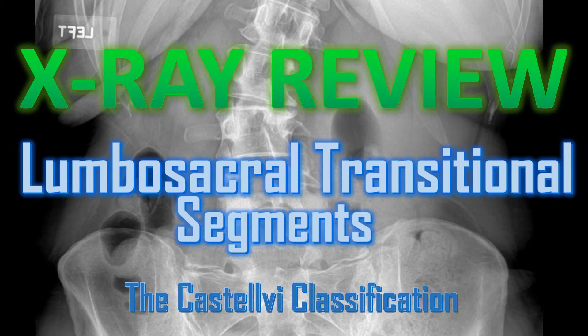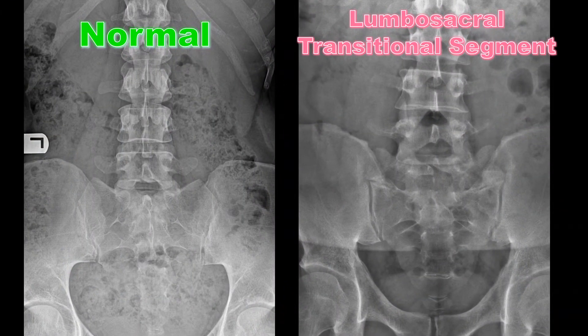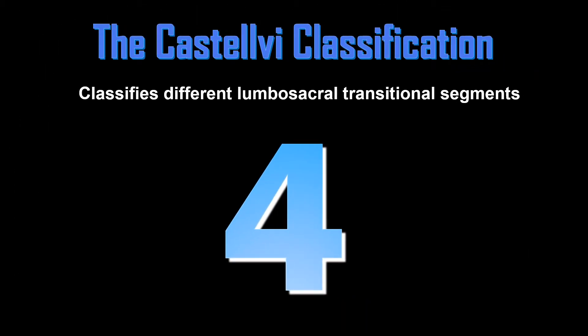Welcome to X-ray Review. This video is about lumbosacral transitional segments and specifically the Castelvei classification. A lumbosacral transitional segment is a congenital anomaly where the most distal lumbar segment and the sacrum can have an altered morphology, where the transverse processes of L5 can become hypertrophied and either articulate or fuse to the sacrum. This segment can be either functionally lumbar or functionally sacral, and Castelvei classifies different lumbosacral transitional segments into four different types.